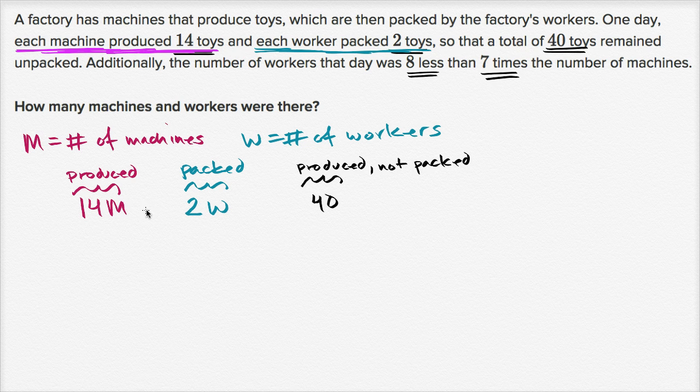Just one equation isn't enough to solve for M and W, but we have another relationship. They say additionally, the number of workers that day was eight less than seven times the number of machines. Or you could say it was equal to seven times the number of machines minus eight. Seven M minus eight.